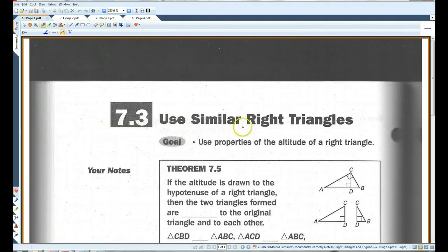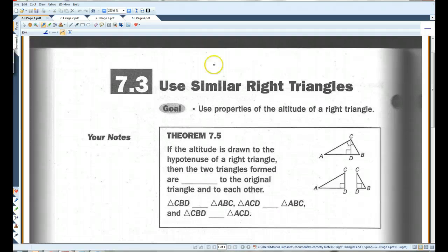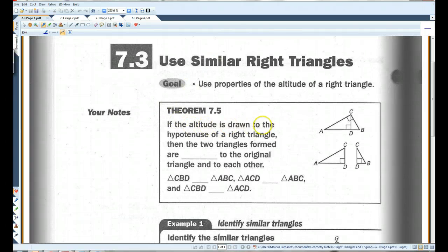If you guys could please turn to the page in your notes that looks like this. 7.3, use similar right triangles. If the altitude is drawn to the hypotenuse of a right triangle, as shown here, then the two triangles formed are similar to the original triangle and to each other.